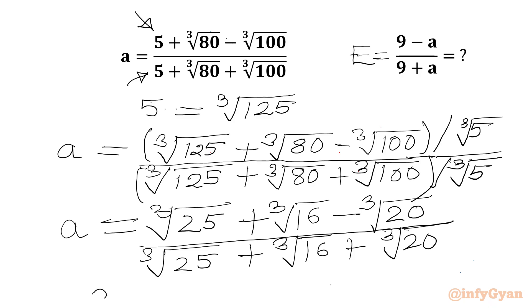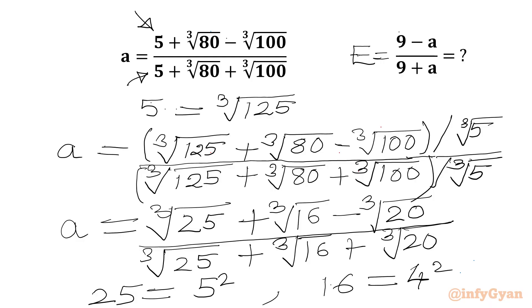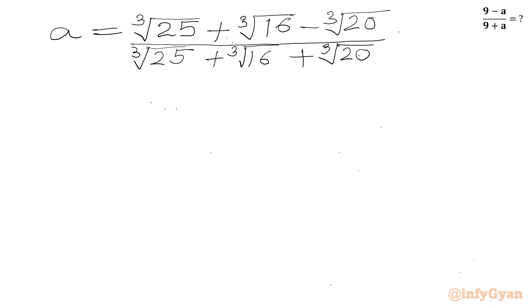Now 25 we can write as 5 squared and 16 is 4 squared. So cube root of 25 we can write as cube root of 5 whole square. Similarly cube root of 16 will be cube root of 4 whole square. Let me write expression a here.